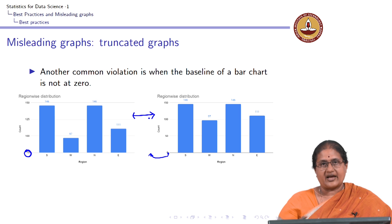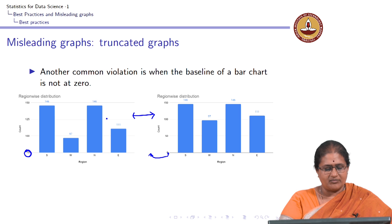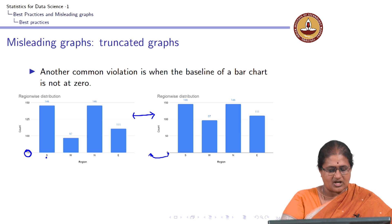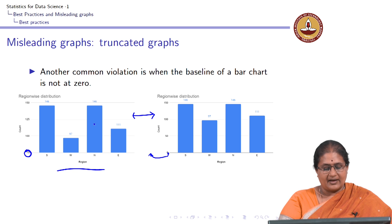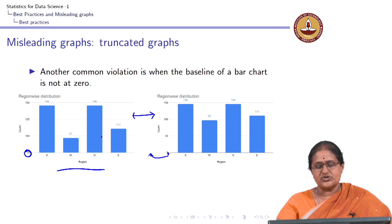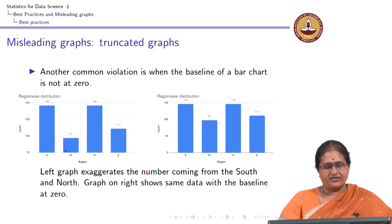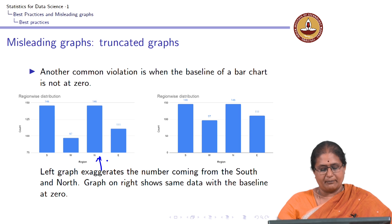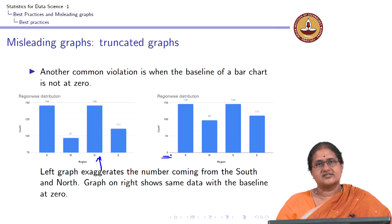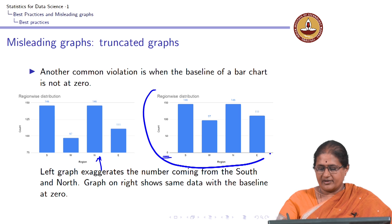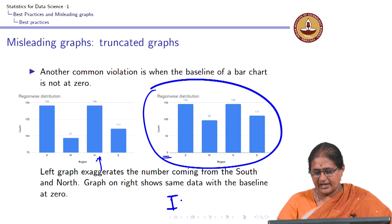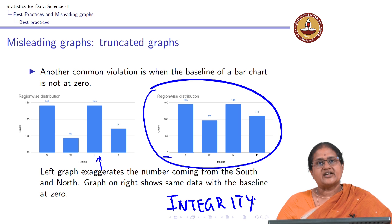These two graphs represent exactly the same data — 500 students, each telling which region they come from: south, west, north, or east. Looking at the truncated graph, you feel that south and north are where the majority of students come from, and that west and east are negligible. But the other graph conveys a different story. The left graph exaggerates the numbers, whereas the right graph shows the same data with the baseline at zero.